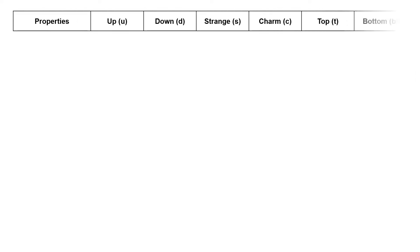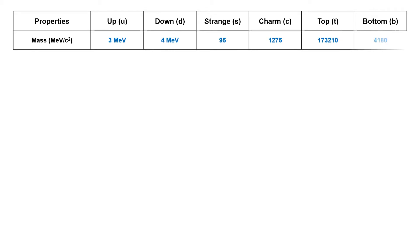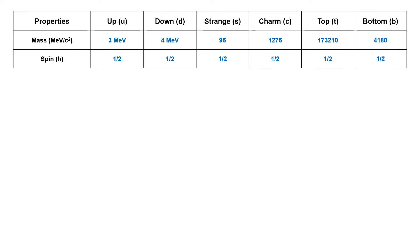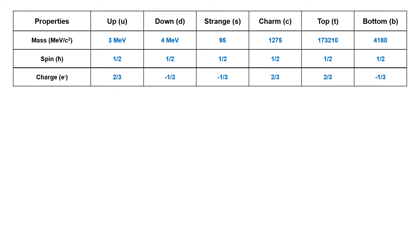Let us first talk about the properties of quarks. All quarks have their own mass. The masses of the up and down quark are almost the same, while the rest of the quarks have mass ranging from a few mega-electron-volts to some giga-electron-volts. All quarks have spin 1/2. Talking about their charges, the charge for up, charm, and top quark is +2/3, and the remaining three have −1/3 of electronic charge.